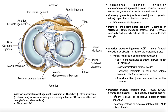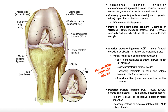The PCL runs downward and then inserts on the posterior aspect of the tibial plateau. Here's the tibial plateau running all around here — this is its posterior aspect. Let's get a better view of that in the next picture.